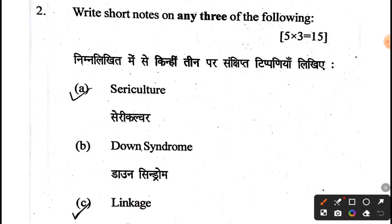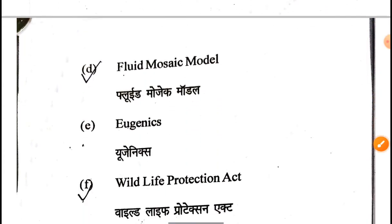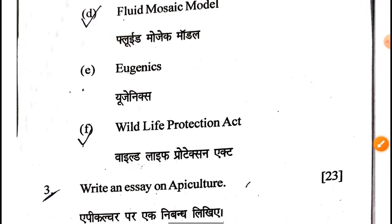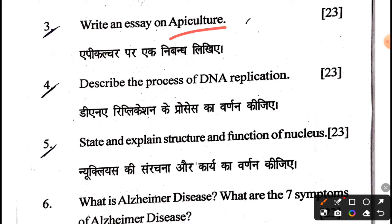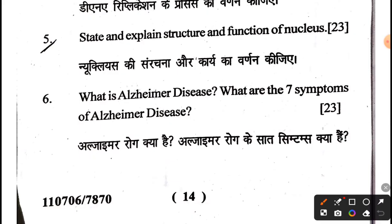Now the short questions section: attempt any three of the following. The topics given were: tissue culture, Down syndrome, linkage, fluid mosaic model, eugenics, and wildlife protection. Other short questions included: the process of DNA replication, state and explain the structure and function of the nucleus, and what is Alzheimer's disease — describe seven symptoms of Alzheimer's disease.